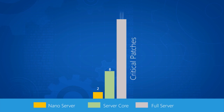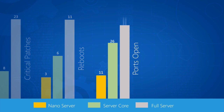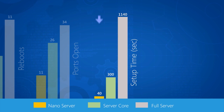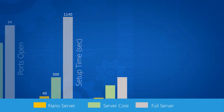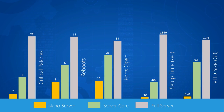So what are some of the other benefits to this lightweight approach? Comparing current builds to Windows Server, we've seen over 90% fewer critical updates, a quarter of the number of reboots, and a significantly smaller attack surface. Setup times are super fast: 40 seconds versus 19 minutes. Let me just let that sink in — 40 seconds versus 19 minutes. And it's over 25 times smaller.